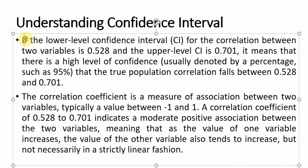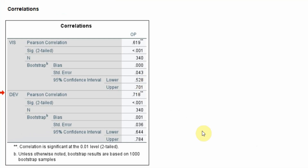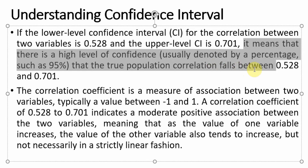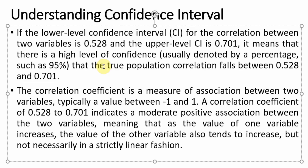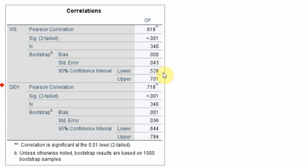In this case, the lower level confidence interval for the correlation between vision and organizational performance is 0.528, and the upper level is 0.701. This means with a high level of confidence — 95% — the true population correlation will fall between 0.528 and 0.701. We are 95% confident that the correlation between vision and organizational performance for the population falls within this range.